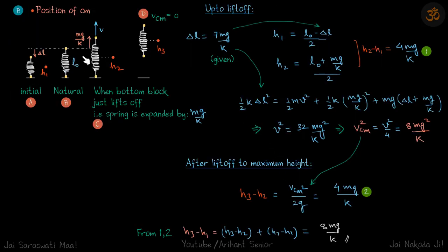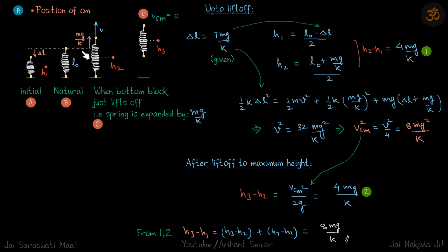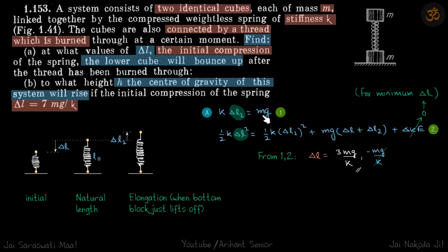We break part two into four steps. Initially the spring is compressed by δl = 7mg/k, and the center of mass is at height h₁ = (l₀ − δl)/2. Second, the spring reaches its natural length. Third, the spring stretches further until the lower block just lifts off — we already know this stretch must be δl₂ = mg/k.